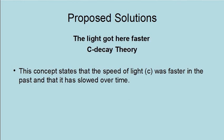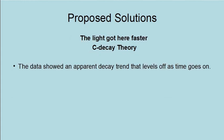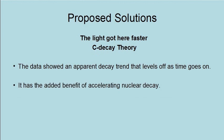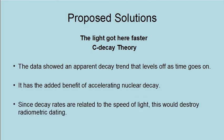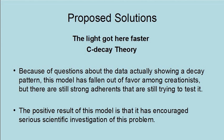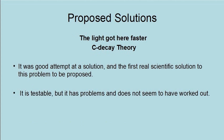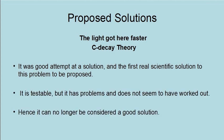The CDK theory states that the speed of light, C, was faster in the past and has slowed over time. Developed by Barry Setterfield and V. S. Tversky based on past measurements of the speed of light, it was the first attempt at a scientific solution to this problem. The data showed an apparent decay trend that levels off over time. It had the added benefit of accelerating nuclear decay, since decay rates are related to the speed of light, which would undermine radiometric dating. Because of questions about the data actually showing a decay pattern, the model has fallen out of favor among creationists, though there are still strong adherents trying to test it. It was a good first attempt — testable, but ultimately it does not seem to have worked out, and is no longer considered a good solution.